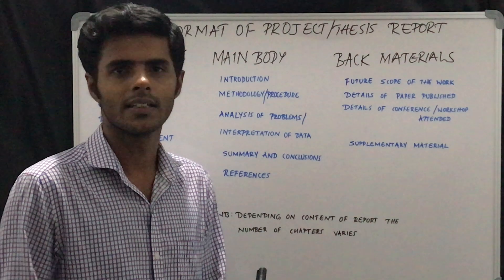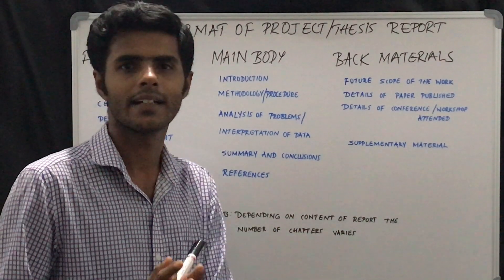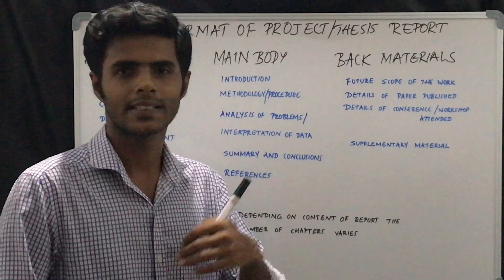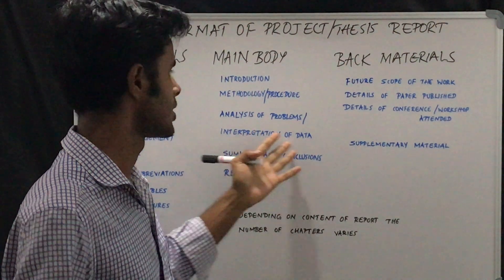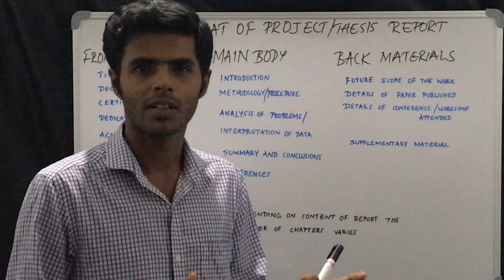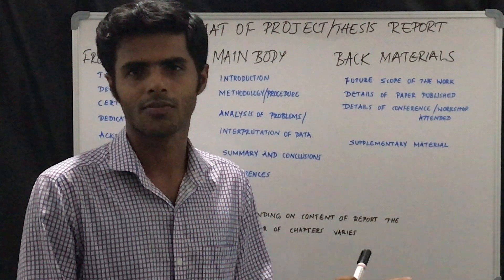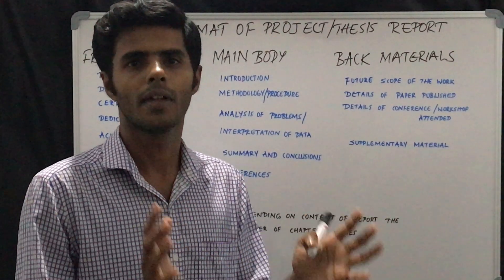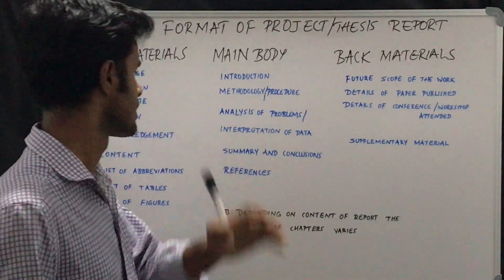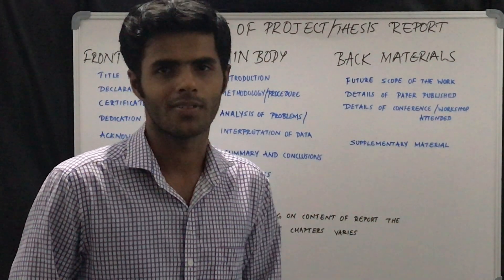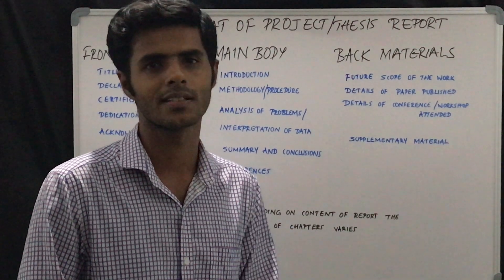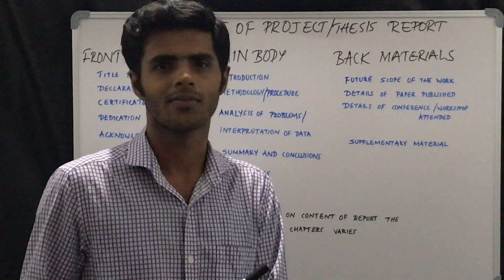Whatever data you are getting during your project work, you are going to interpret and discuss that data in detail — that is what is meant by interpretation of data. The next one will be summary and conclusions: what is the summary of the entire project or research work and what are the major conclusions. That is what you express in this section. Then comes the references, which some people organize chapter-wise and others place at the end of the thesis.